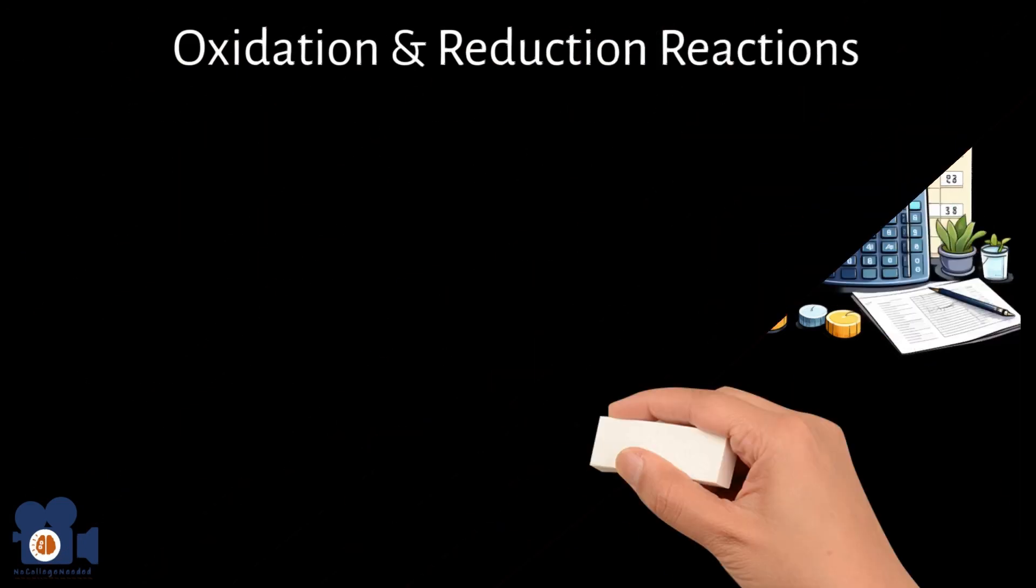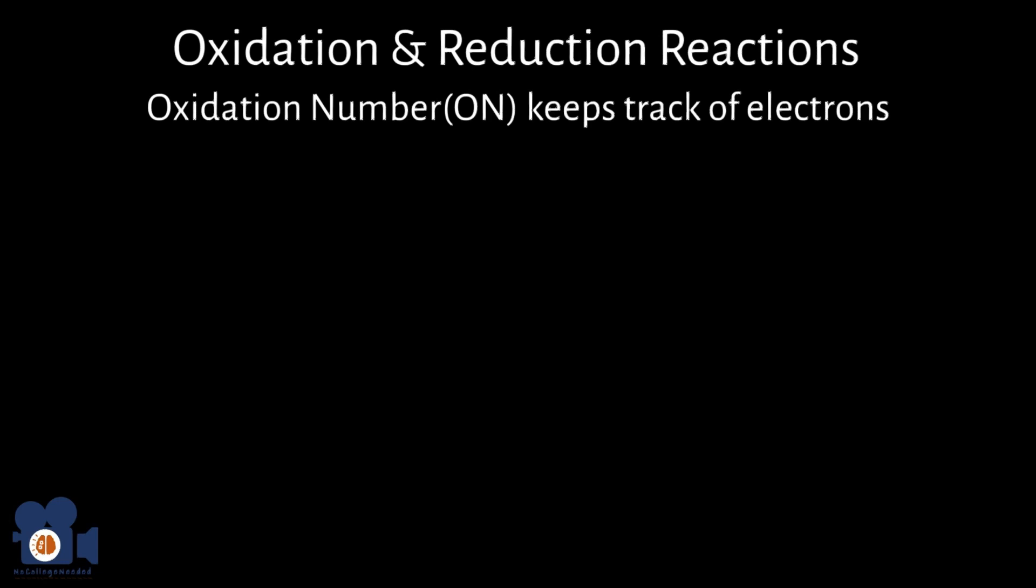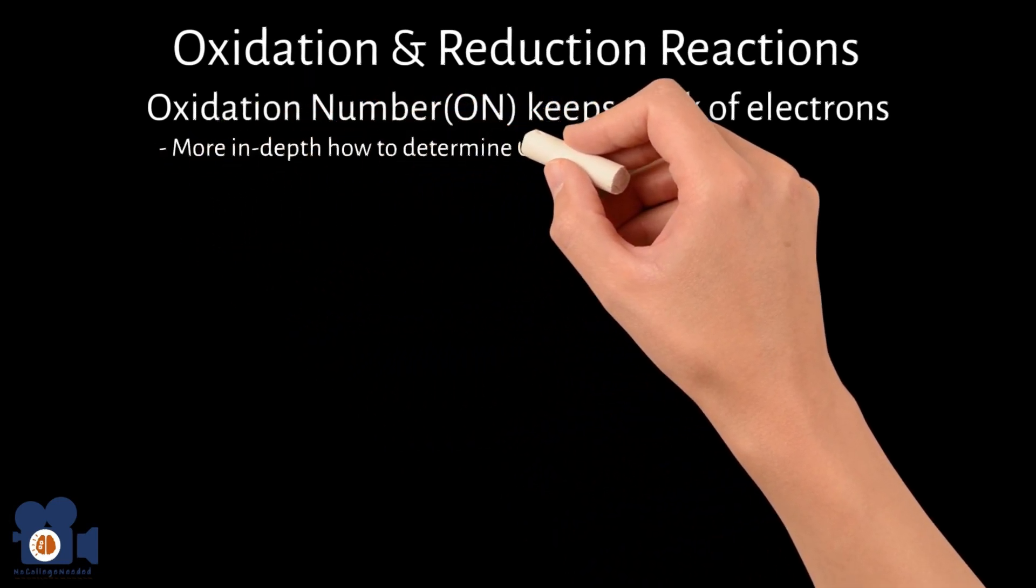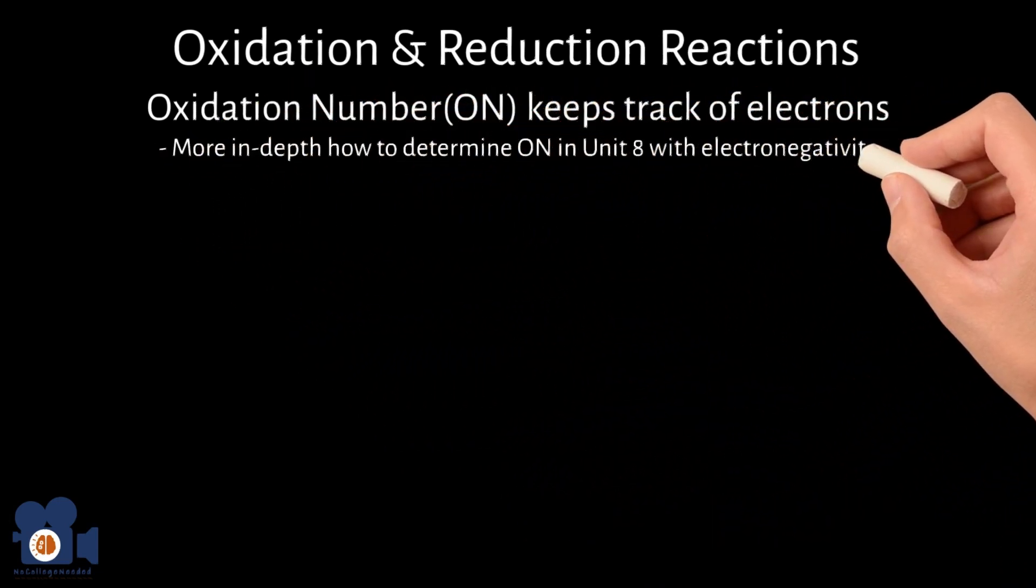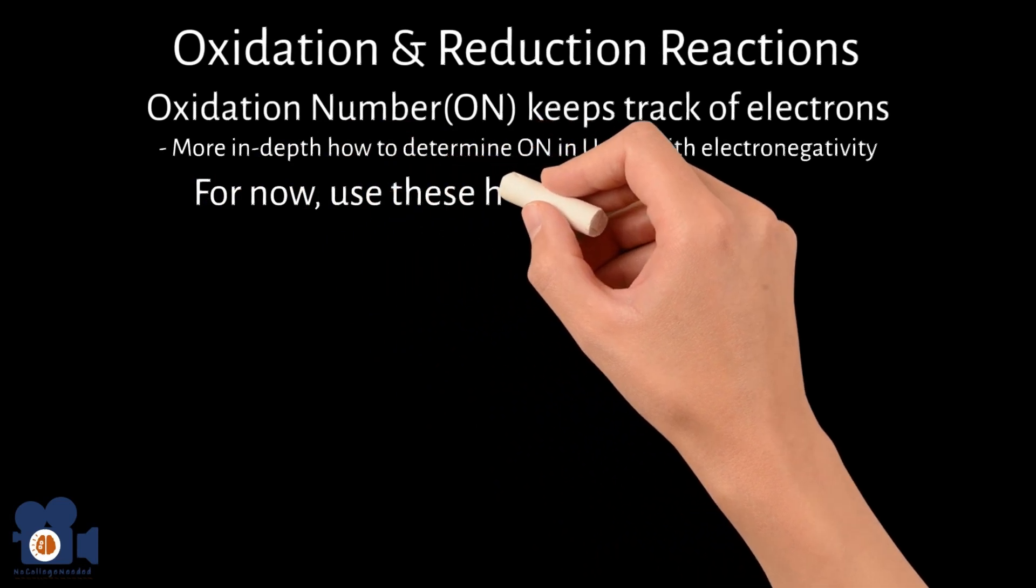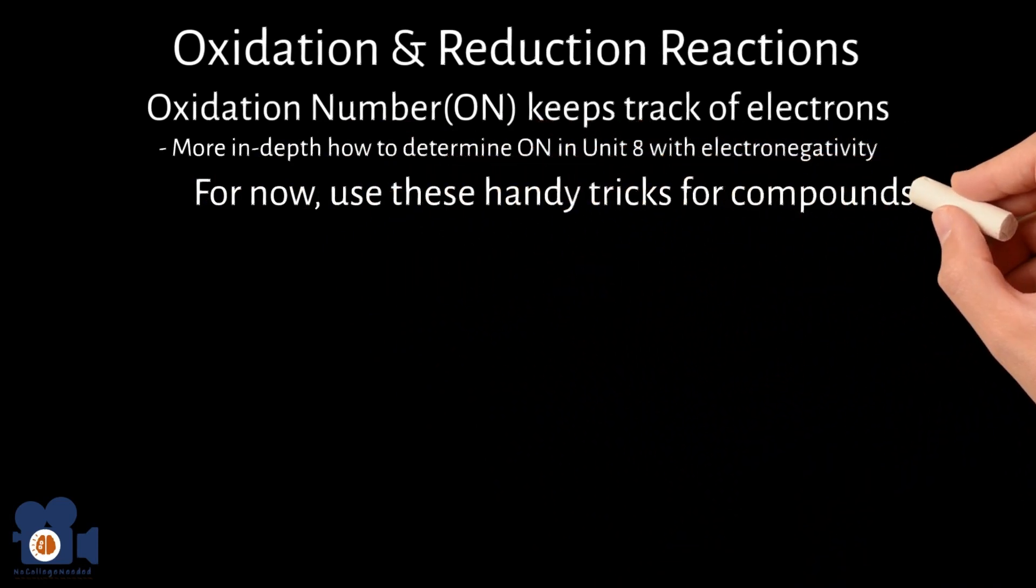We'll go over in more depth how to determine the oxidation number of any element in a compound once we go over electronegativity with chemical bonding in unit eight. For now, use these handy tricks for compounds containing different elements.